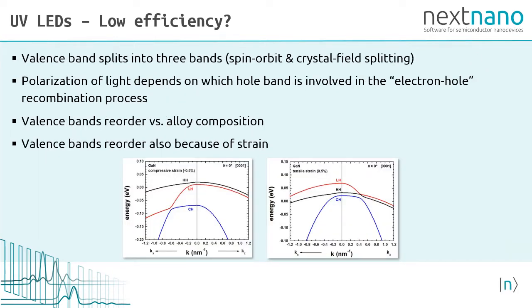So the valence bands in nitride semiconductors split into three bands. Due to spin orbit and crystal field splitting, we can call the holes heavy hole, light hole and crystal field split off hole. And the polarization of light depends on which hole band is involved in the electron to hole recombination process. The valence bands reorder versus alloy composition because in aluminum nitride, the highest hole band is a different one than in gallium nitride. And also the valence bands reorder because of strain.